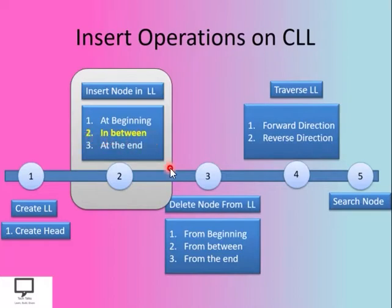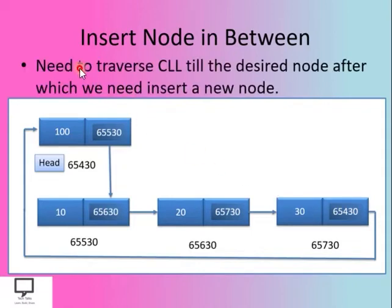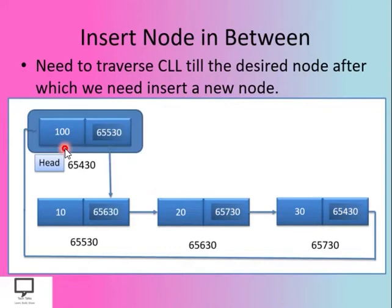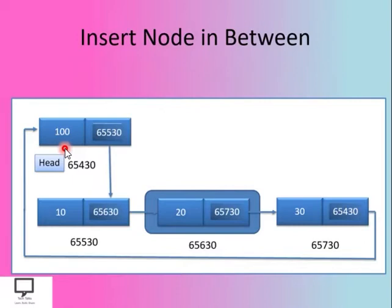Now let's look at inserting a node in between in the circular linked list. First, whenever we want to insert a node in between, we need to traverse the circular linked list until the desired node — because we are inserting the new node after that desired node. Using the traversal algorithm starting from the head node, let's assume we want to insert a node after value 20. We traverse until we find node 20 — that is our desired node.